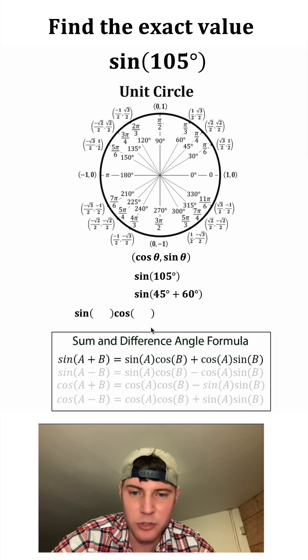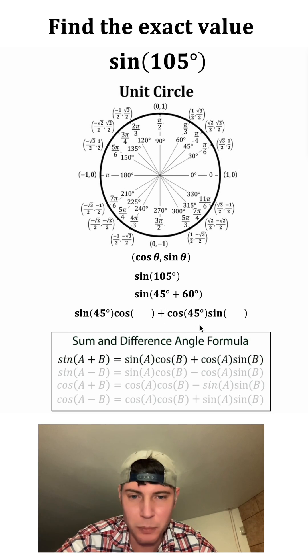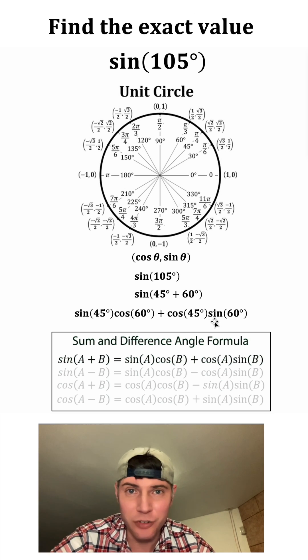This will be sine cosine plus cosine sine. The first angle, 45 degrees, will go in the first spot of each of these. And the 60 degrees will go into each of those. All four of these are on the unit circle, so we can find each of those.